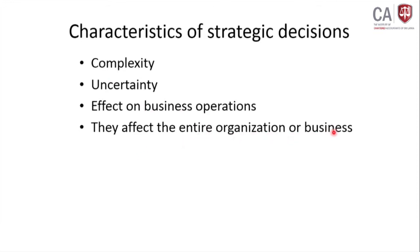Strategic decisions affect the entire organization or business. As an example, there was a software development company around 2005 that was very good in software development and infrastructure. They entered another business — selling pieces — spending all their profit from 5 years. Ultimately they could not achieve the market they wanted; it was a wrong strategic decision, and the entire organization failed. That can affect any organization that does not take strategic decisions well.